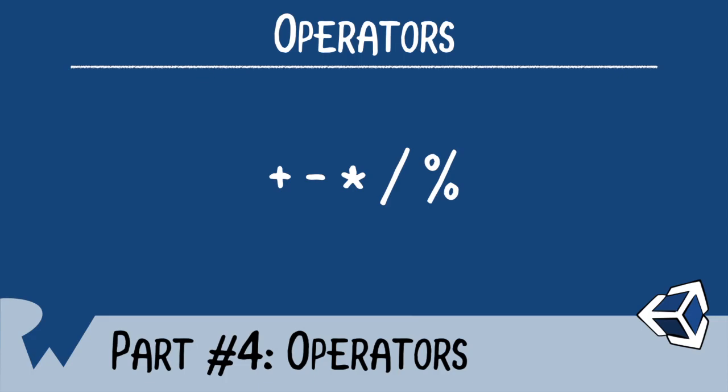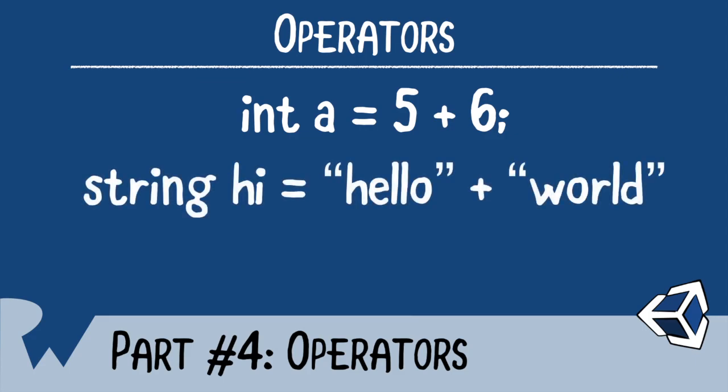Each of these does an action, and they don't just work on numbers. Take the plus sign. Using it between numbers adds the numbers together. You can also use it between strings, which will combine the text. As you can see, operators are context-sensitive. Let's see some of these operators in action.